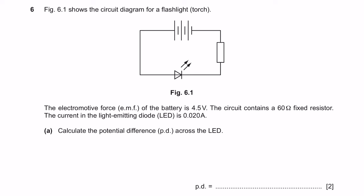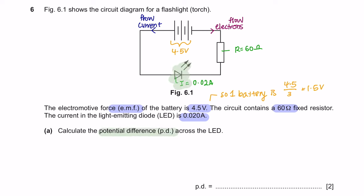Question 6. Figure 6.1 shows the circuit diagram for a flashlight. There are three batteries here, positive terminal and negative terminal. This is a fixed resistor and here is an LED. An LED is a light-dependent resistor. The electromotive force EMF of the battery is 4.5V. The circuit contains a 60Ω fixed resistor. The current in the light-emitting diode is 0.02A. Question A: Calculate the potential difference across the LED.